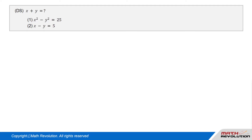Question. DS. x plus y equals what? Condition 1: x squared minus y squared equals 25. Condition 2: x minus y equals 5.